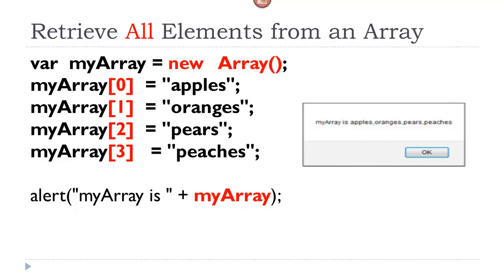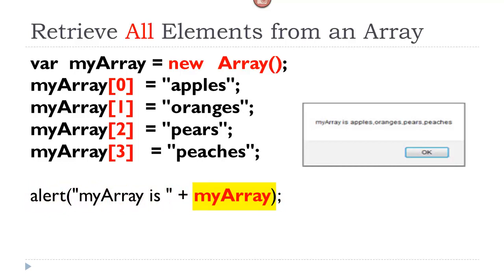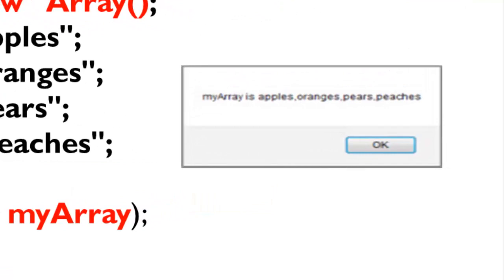Now supposing you wanted to retrieve all the elements at once, you could do that using, and here I have an alert as an example, and just by using the name of the array itself will automatically return all the values it holds. So if you look to the right at this, my alert box, notice how nicely JavaScript lays everything out for you. It comma separates them, and it doesn't even put a comma at the last one.